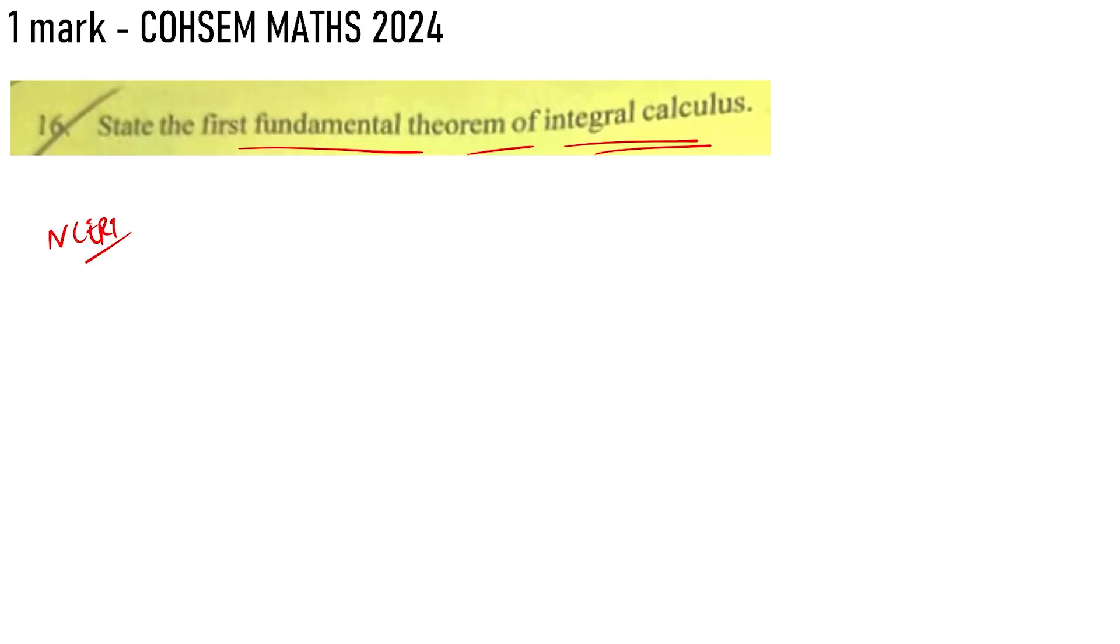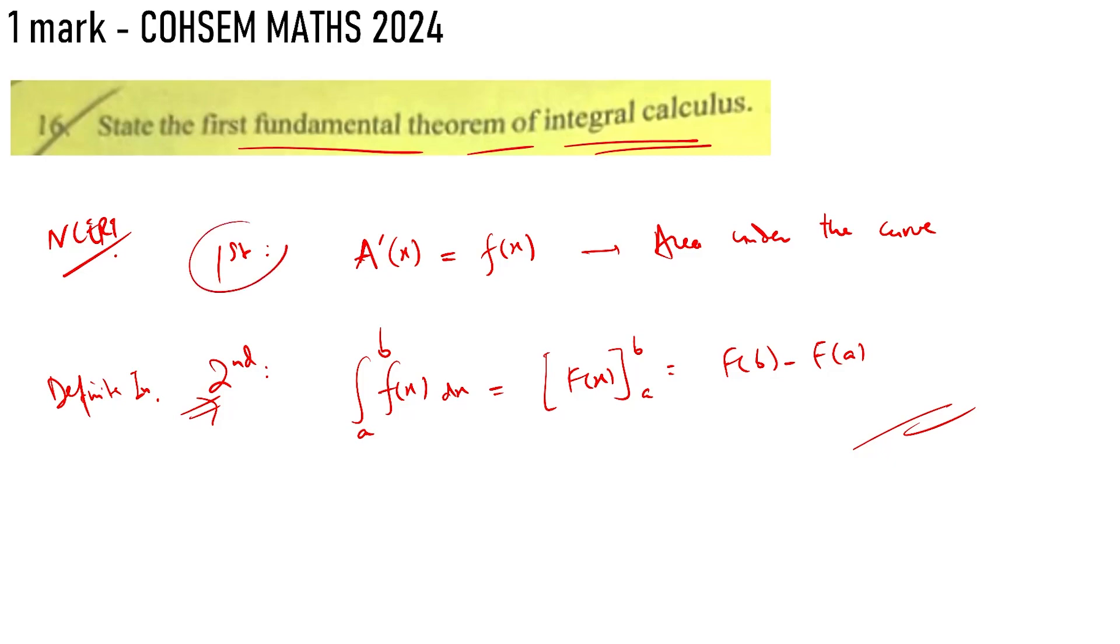This is the first fundamental theorem of integral calculus in the NCERT textbook. There are first and second theorems. The first theorem states that the area function, when you differentiate it, gives you the original function. This is the anti-derivative. The definite integrals give the area under the curve. This is the interpretation of integration. If you have f(x) and you integrate from a to b, the integral gives you the graph. When evaluated from a to b, you get f(b) minus f(a).